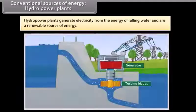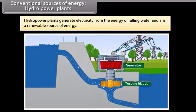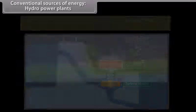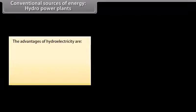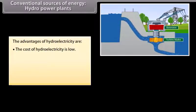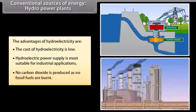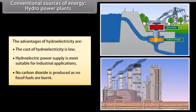Conventional sources of energy: Hydro power plants. Hydro power plants generate electricity from the energy of falling water. Hydro power is a renewable source of energy. The advantages of hydroelectricity are: the cost of hydroelectricity is low, hydroelectric power supply is more suitable for industrial applications, and no carbon oxide is produced as no fossil fuels are burnt.